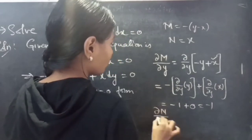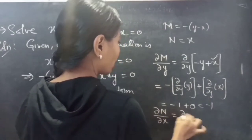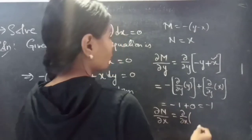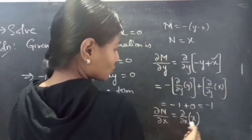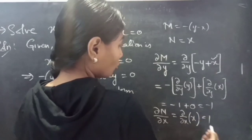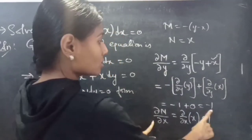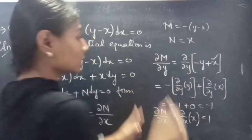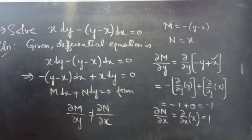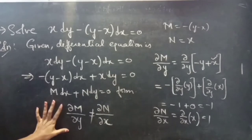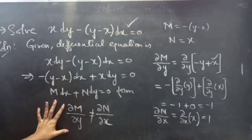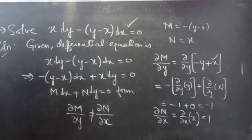Now let's find the partial derivative of N with respect to x, which equals ∂/∂x of x (where N equals x). Partial derivative of x with respect to x is 1. We got 1 for ∂N/∂x and minus 1 for ∂M/∂y. It is clear that ∂M/∂y is not equal to ∂N/∂x. So from this we can say that the given differential equation is a non-exact equation. Therefore, equation 1 is a non-exact equation.